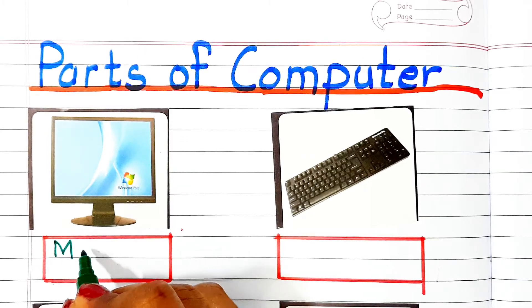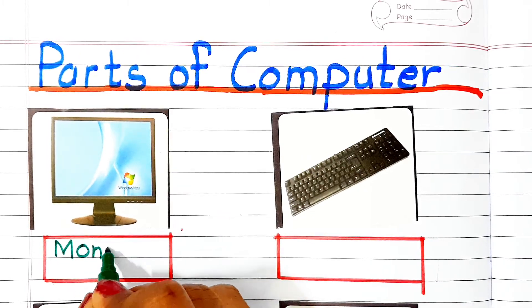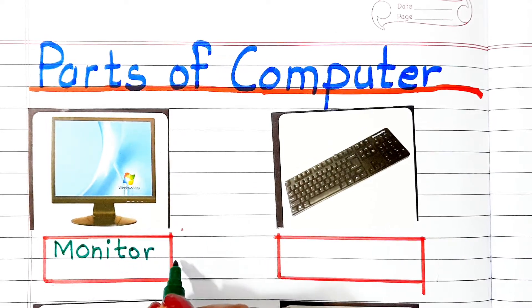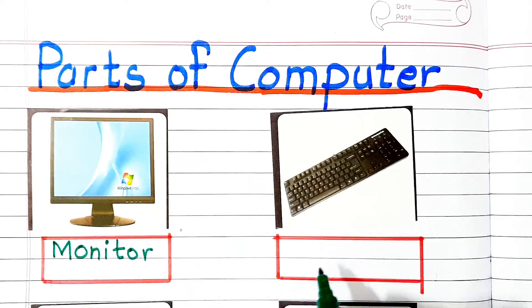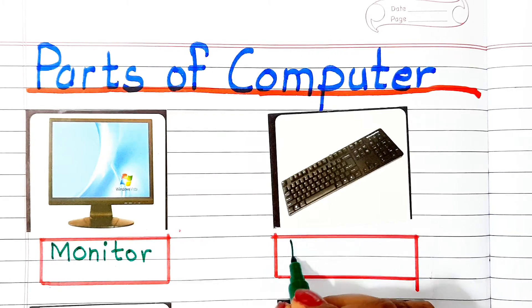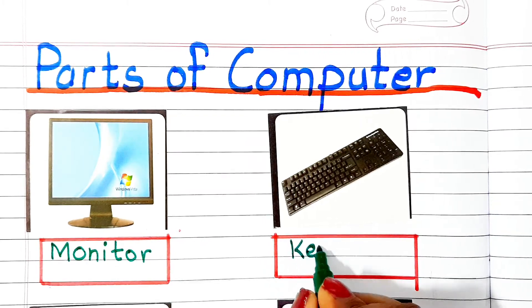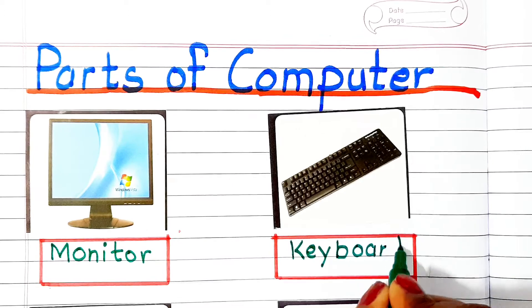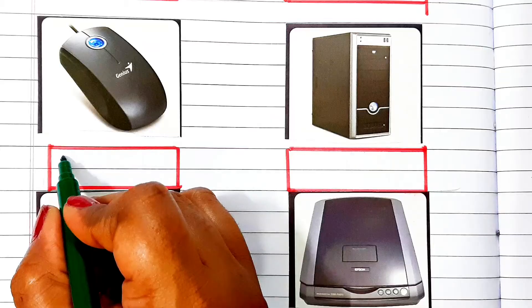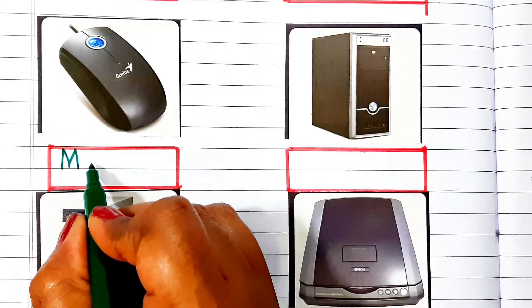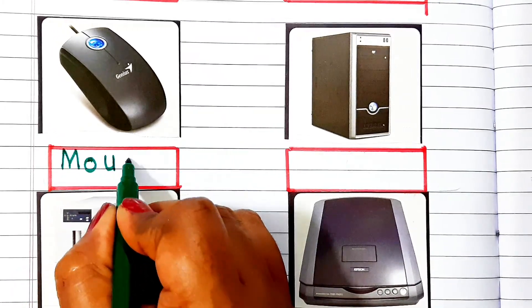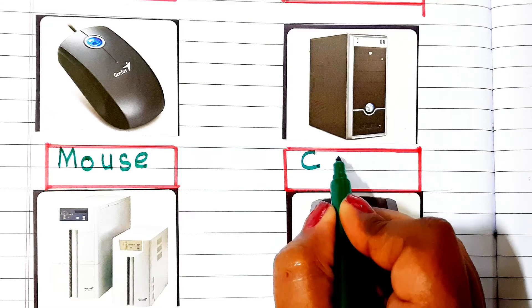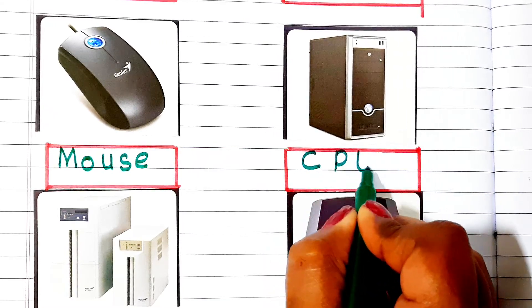M O N I T O R — Monitor. K E Y B O A R D — Keyboard. M O U S E — Mouse. C P U — CPU.